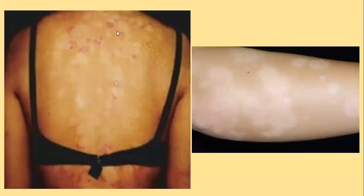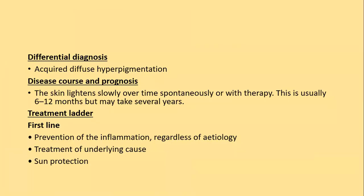You can see the residual post-inflammatory hyperpigmentation due to psoriasis. The acquired diffuse hyperpigmentation lightens slowly over time — spontaneously or with therapy — usually taking 6 to 12 months but sometimes longer. Treatment: first line is prevention of inflammation regardless of etiology and treating the underlying cause quickly — for example, lichen planus or lichenoid drug reaction — as rapid treatment reduces chances of post-inflammatory pigmentation, along with sun protection.